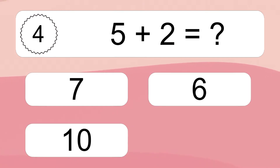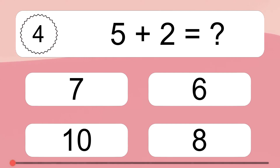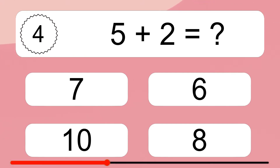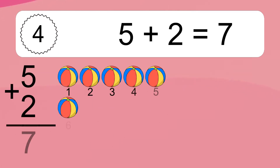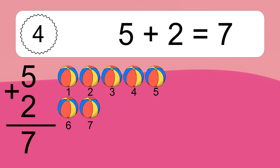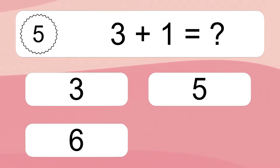5 plus 2 equals what? 5 plus 2 equals 7. Let's count it! 1, 2, 3, 4, 5, 6, 7.